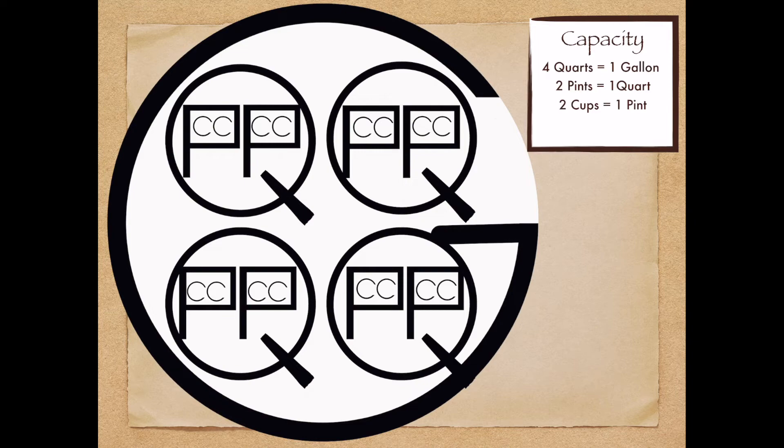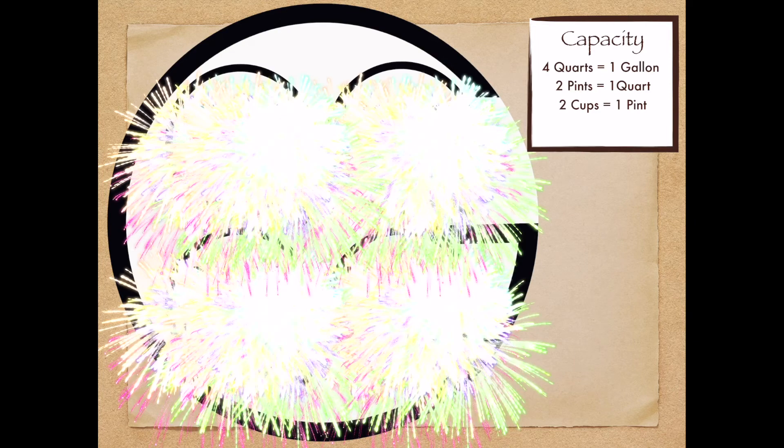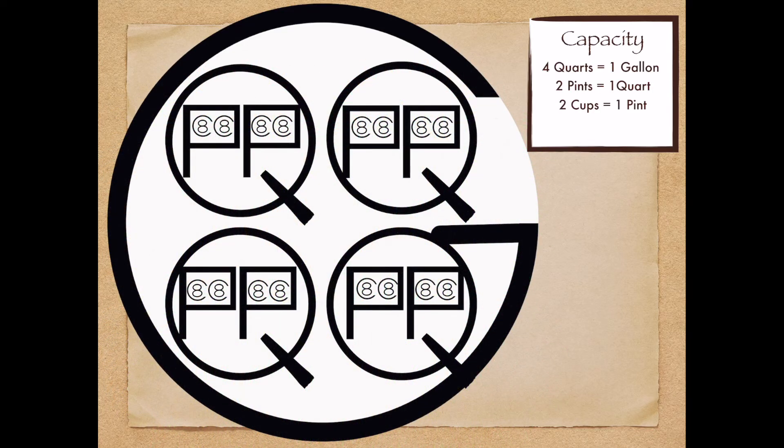And how old was each child? Each child happened to be eight years old. And the eight represents the number of fluid ounces in each cup.